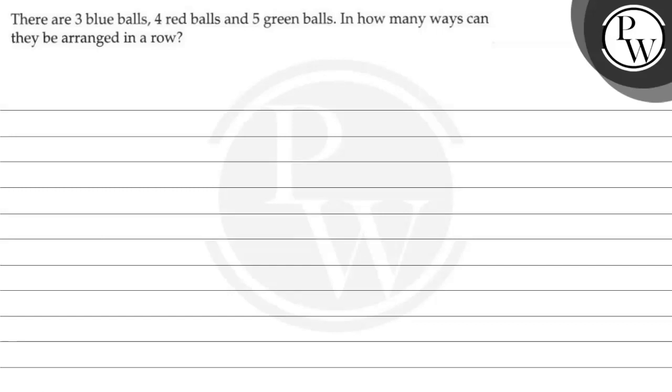Hello, let us read the question. The question says there are three blue balls, four red balls and five green balls. In how many ways can they be arranged in a row?